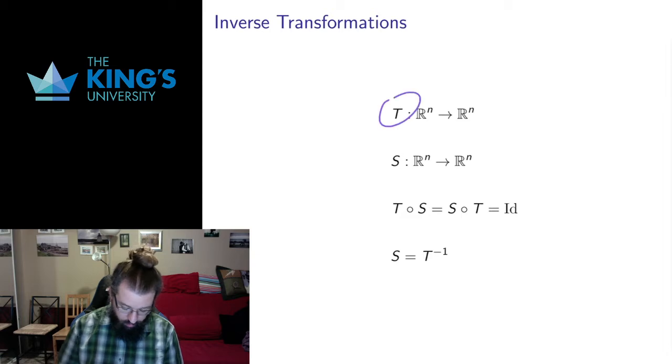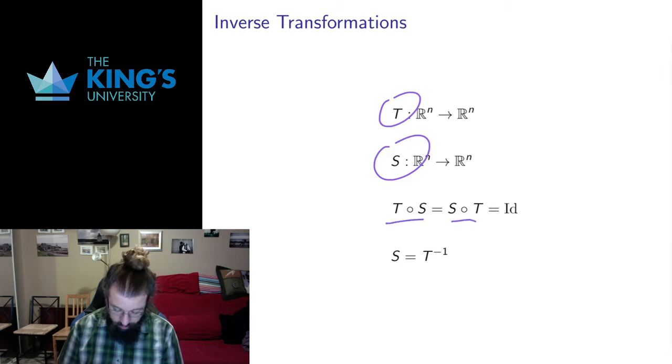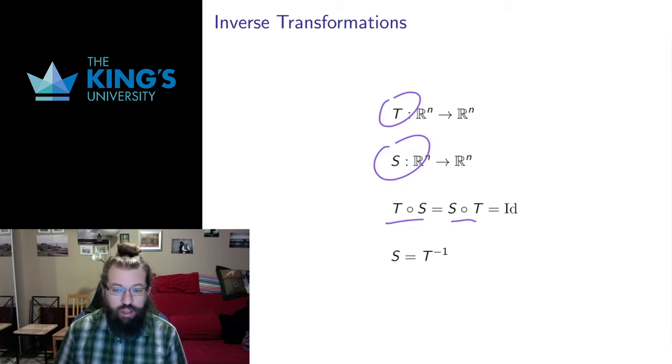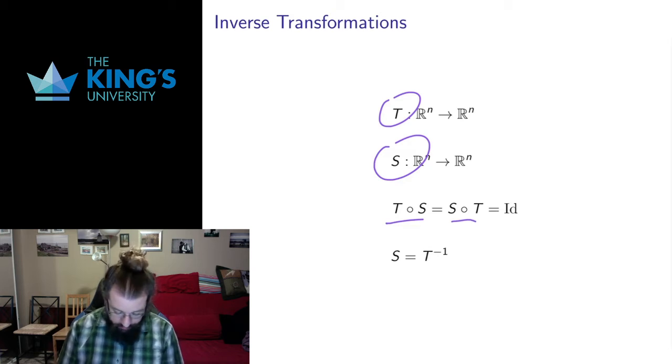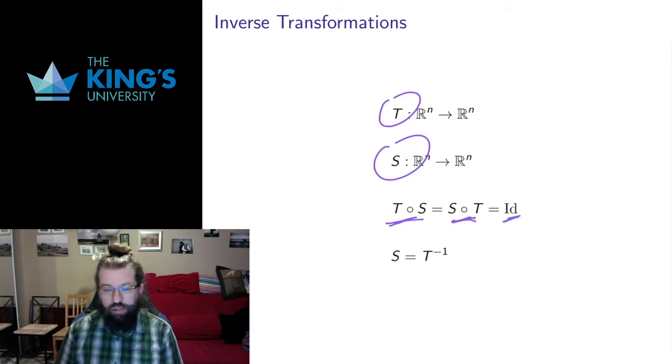So if I have transformation T, then I can ask whether or not there exists transformation S such that the composition in either direction—and I have to worry about either direction because of the non-commutativity of composition—that a priori S composed T and T composed S might be different. But S is an inverse to T if both of these compositions are the same as the identity transformation.